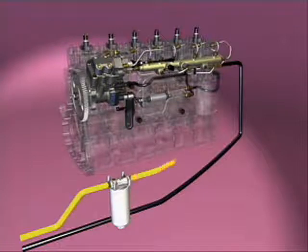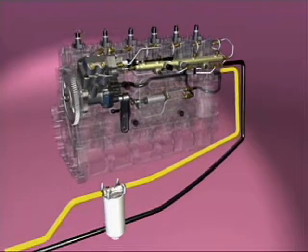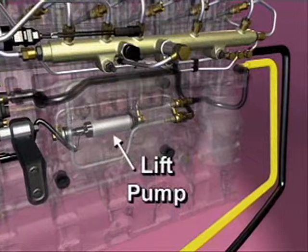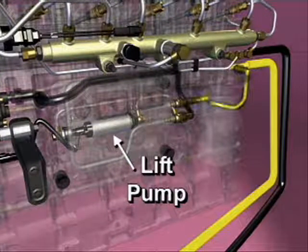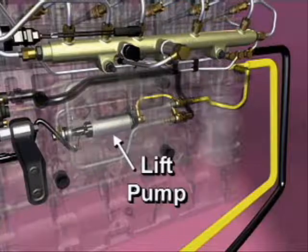Fuel leaves the pre-filter and flows to the inlet of the ECM cooling plate. The lift pump is controlled by the ECM and runs for approximately 30 seconds whenever the key switch is turned to the run or start position.